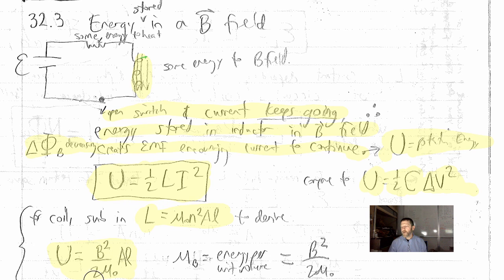But this is the energy stored in an inductor right here. B squared, magnetic field squared, times the volume over two mu-naught. So, here's what we get. The energy per unit volume stored in an inductor is B squared over two mu-naught.